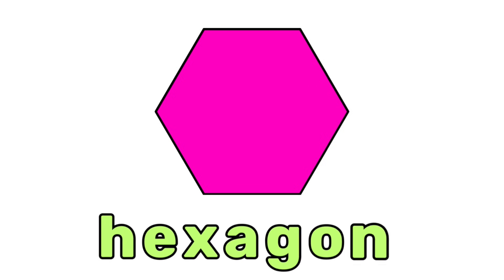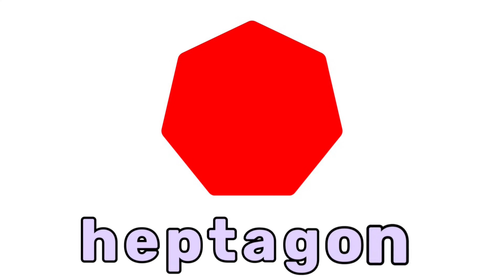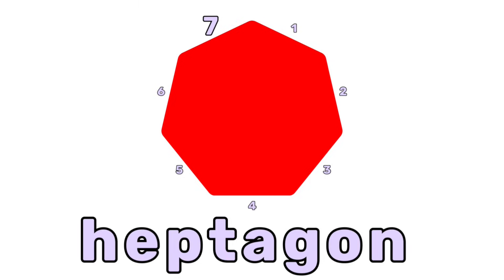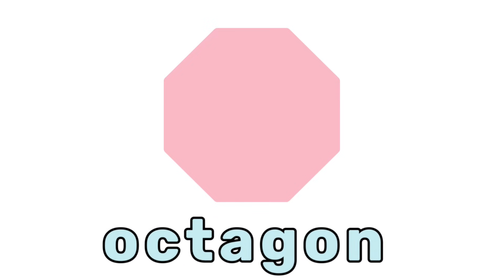What shape is this? Great, it's a hexagon. A hexagon has six sides. What shape is this? Correct, it's a heptagon. A heptagon has seven sides. What shape is this? That's right, it's an octagon. An octagon has eight sides.